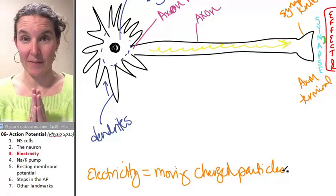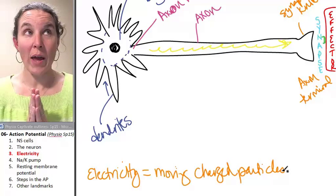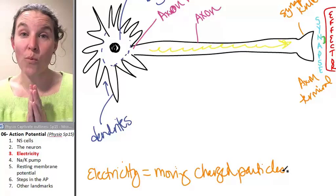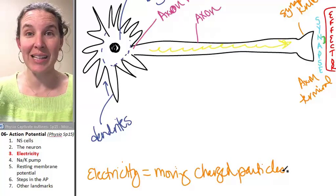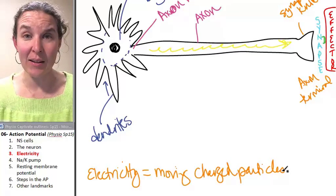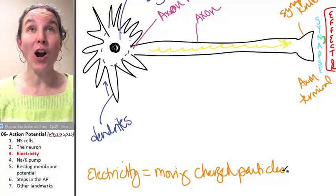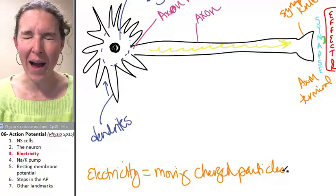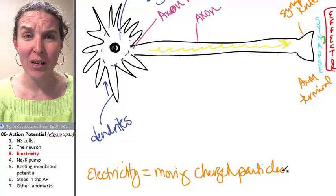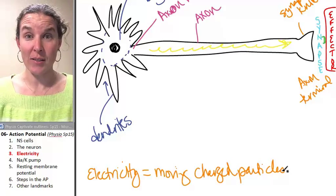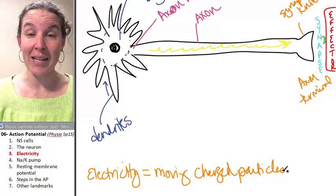That's it. So when there is electricity that runs through the wires to your light and then lights up your light, all that is is moving charged particles. And the particles that are moving through the wire in your light bulb are electrons, and we know electrons are negatively charged.